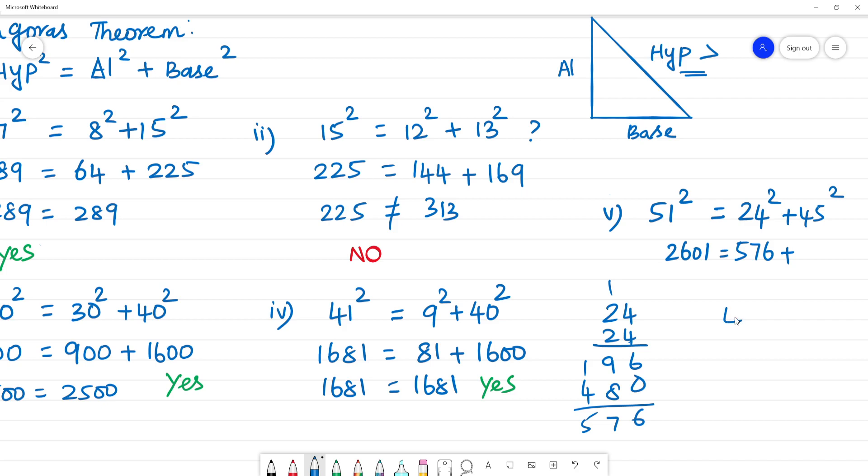Plus 45 square. 5 times 5 is 25 remainder 2, 5 times 4 is 20 plus 2 is 22. 4 times 4 is 16 plus 2 is 18. So 2025.